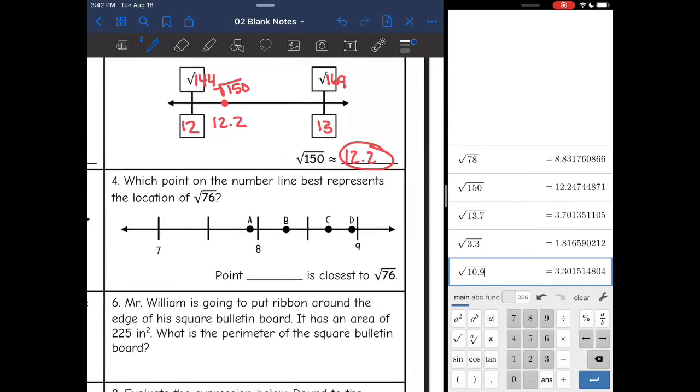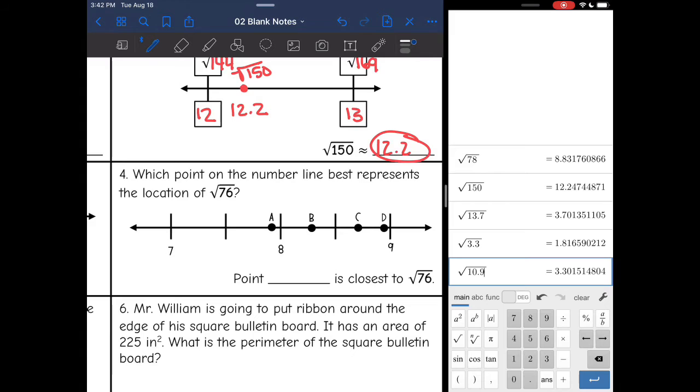Let's look at the next one. It says, which point on the number line best represents the location of square root of 76? So I need to figure out what square root of 76 is approximately as a decimal.